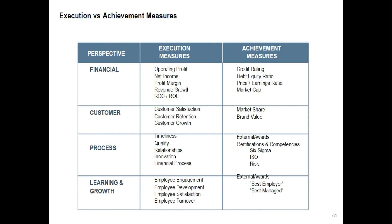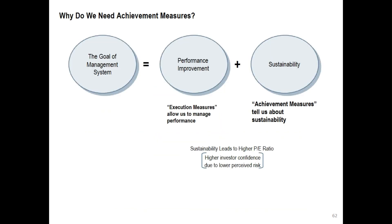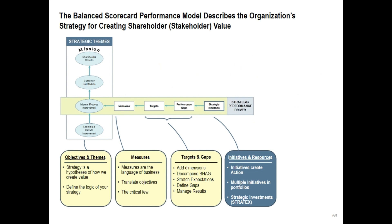Why do we need achievement measures? The goal of the management system is to have performance improvement and sustainability. Sustainability leads to a higher P/E ratio. Look at the balanced scorecard performance model now — it will be refreshing to see the model to understand better.